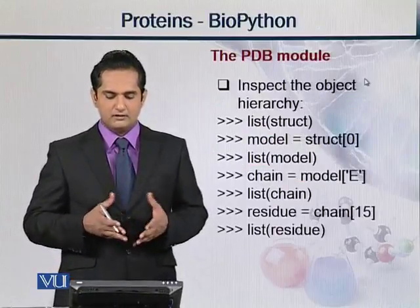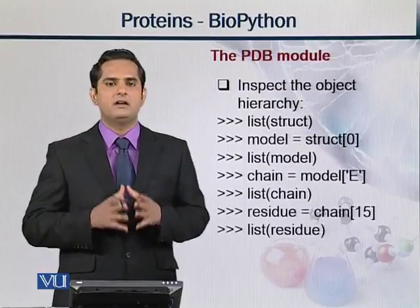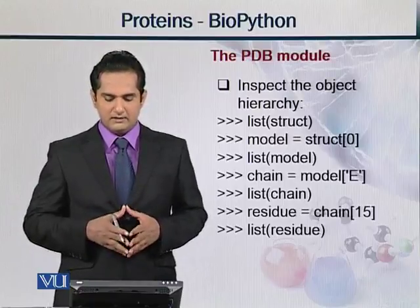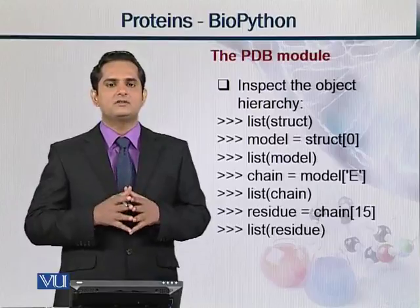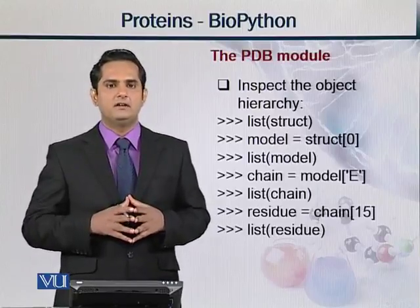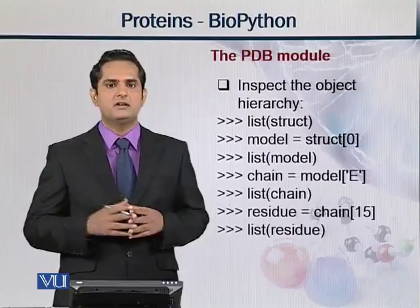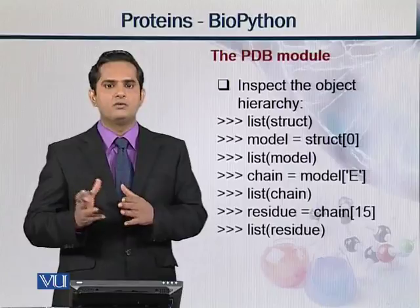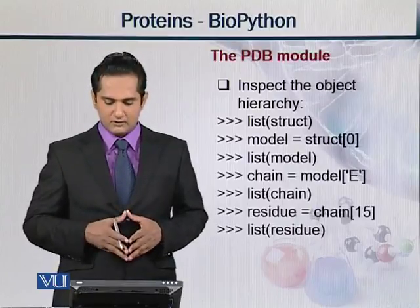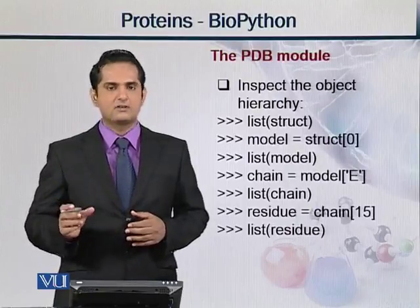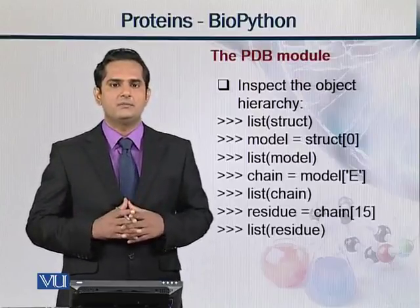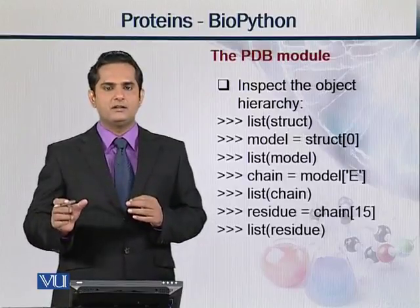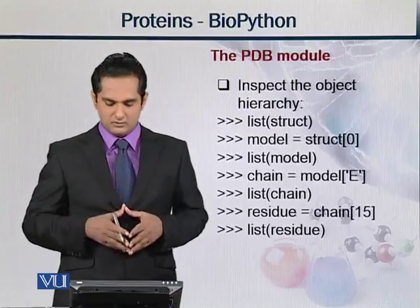Then PDB module — uske andar humare paas kaun kaun se modules hain, ya kaun si commands hain jo hum use kar sakti hain, BioPython ki for PDB module. Number one is list_struct. List struct se muraad kya hai — ki jitne structures maujood hain, un sab ki list ho jayegi. Jaise humne last slide mein dekha, humare paas ek structure tha, isi tarah doosra, teesra — aur jitne bhi structures humare paas PDB mein maujood hain, un sab ka count with their names ho jayega. Then model = struct[0] — jo first structure hai, uska model kya hai, uski information humare paas aayegi is command se. Then list_model — list model se muraad yae, ki agar main model ka naam wahan pe de dhu, to us model ke baare mein jo information hai, woh list ho jayegi.